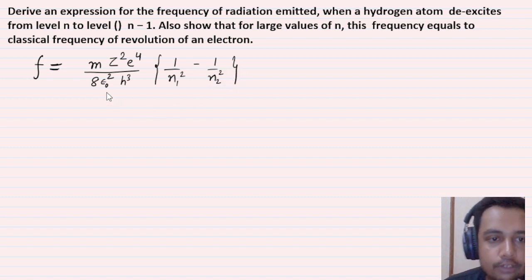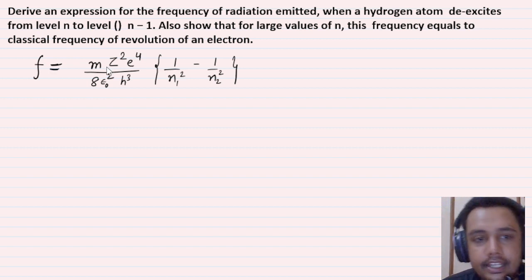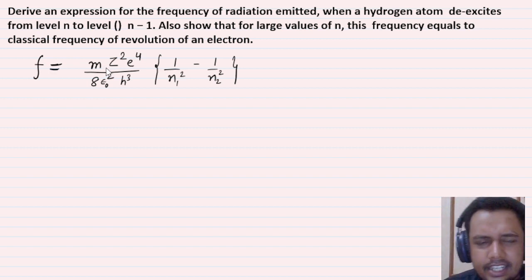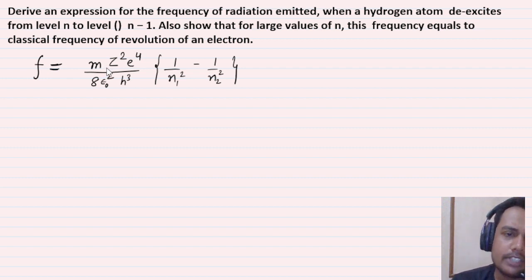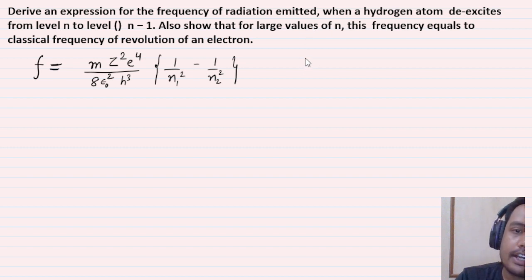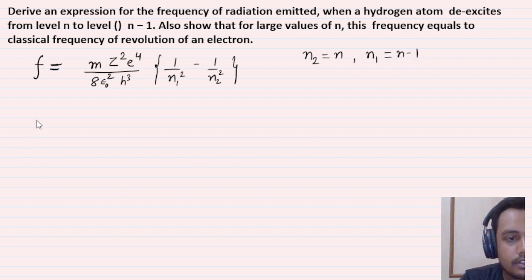In the books, the formula will sometimes be written using K, where K equals 1/(4πε₀), the proportionality constant. So the formula can appear in K terms as well. Here, f = mZ²e⁴ / (8ε₀²h³) × [1/N1² − 1/N2²]. For hydrogen atom, Z becomes 1.